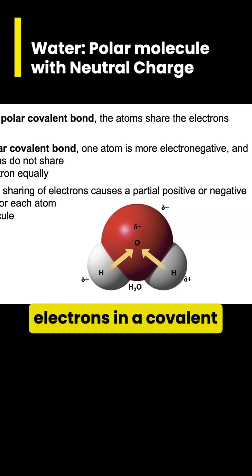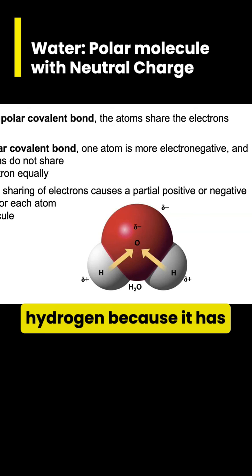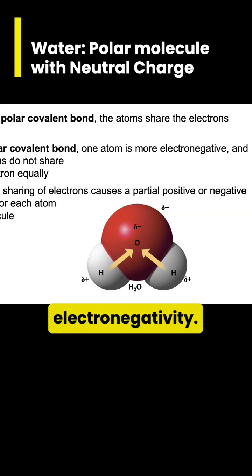In other words, electrons in a covalent bond are shared between the oxygen and hydrogen, but the oxygen will hog them and hold them nearer to it than hydrogen because it has a higher electronegativity.